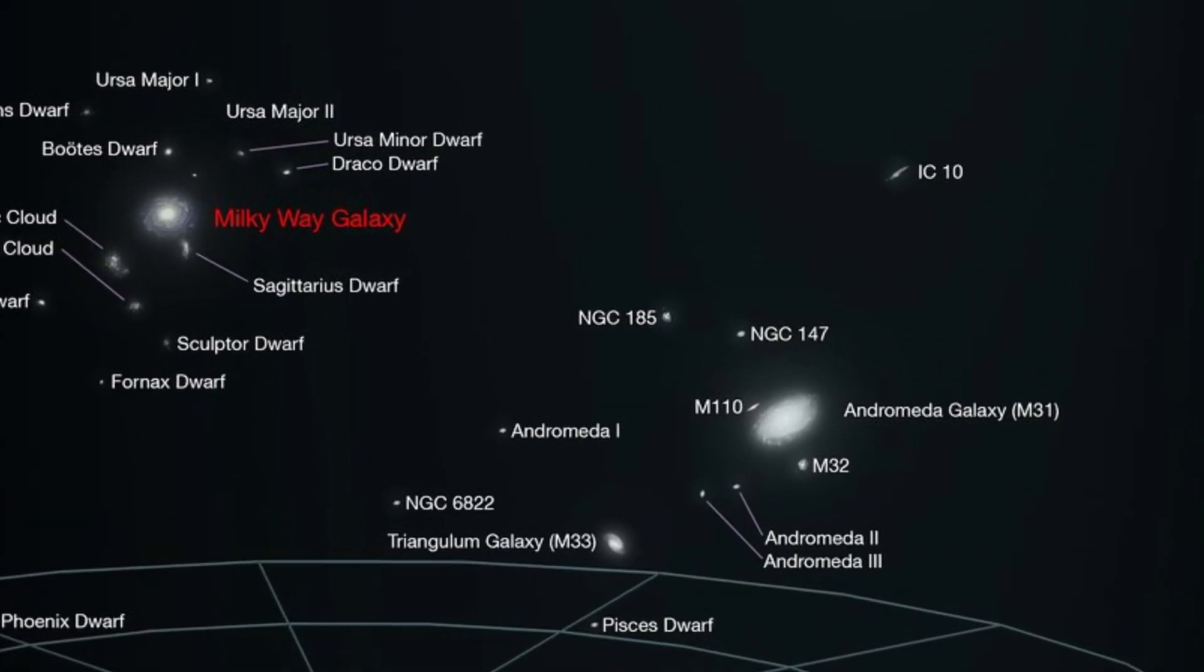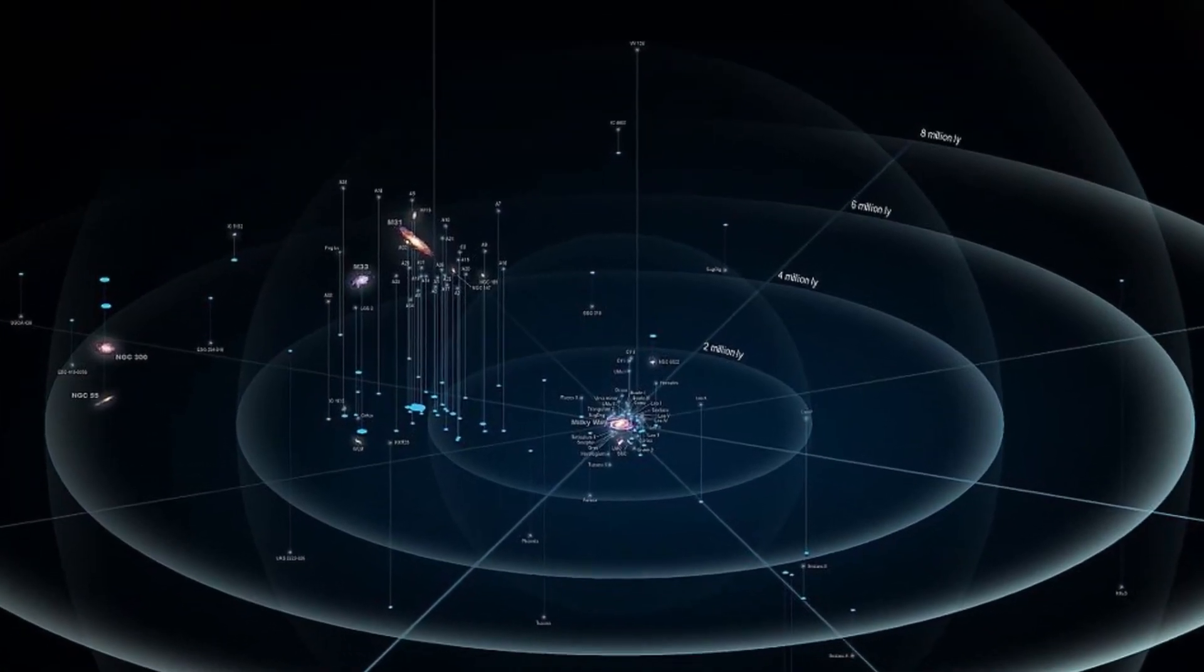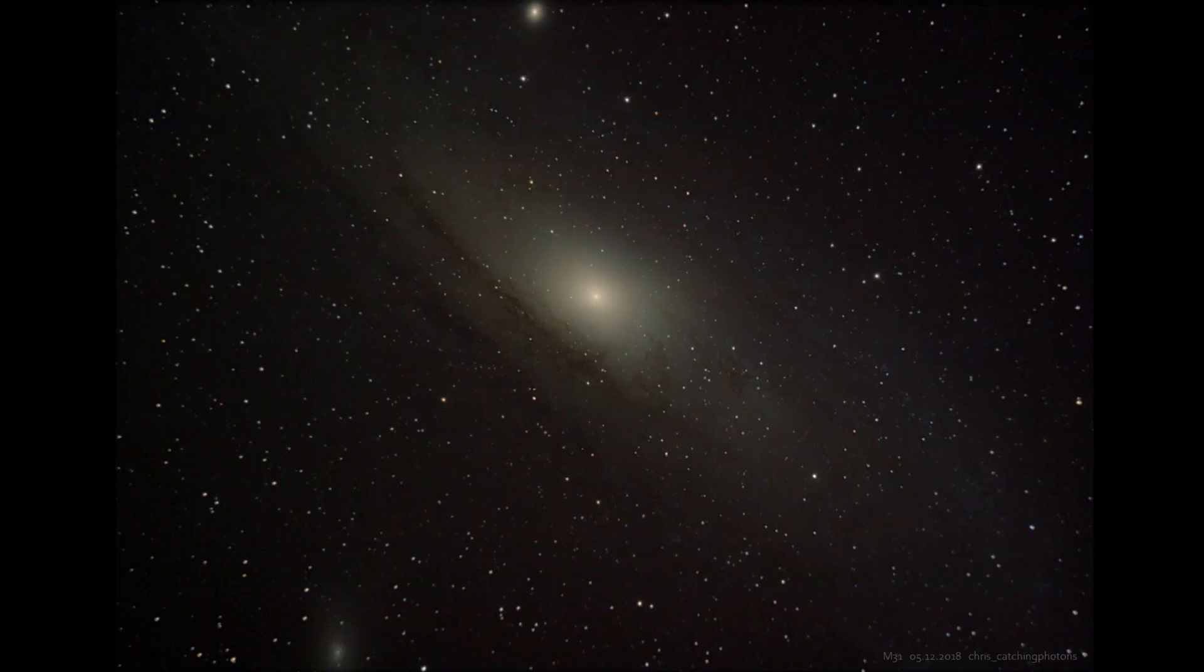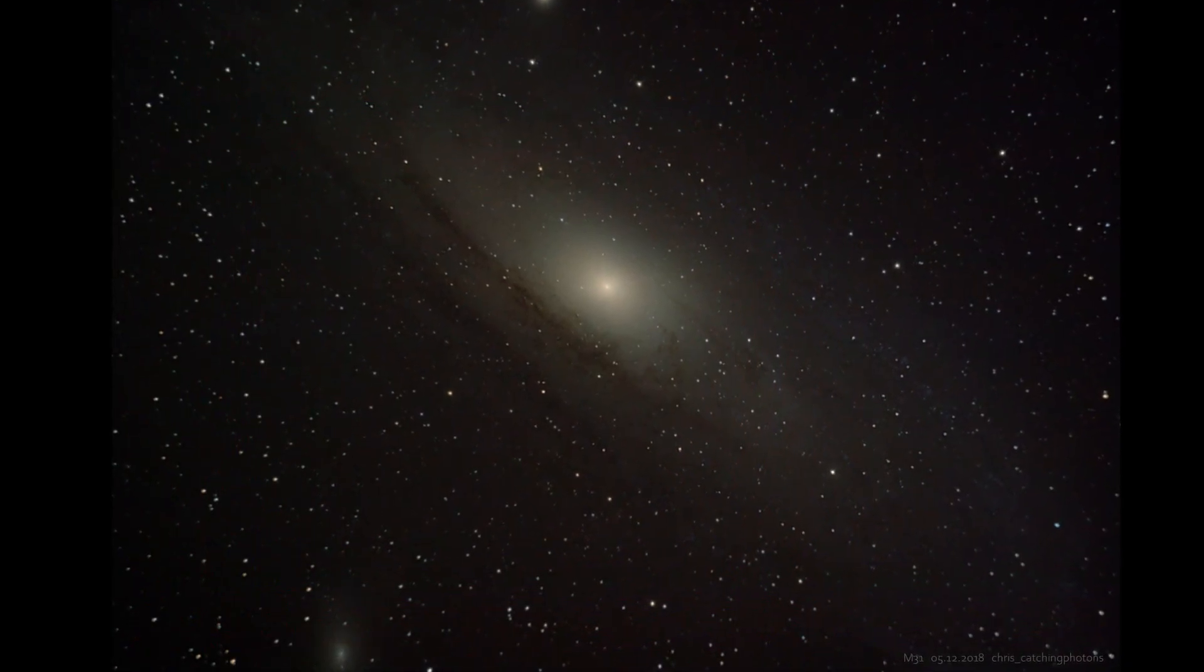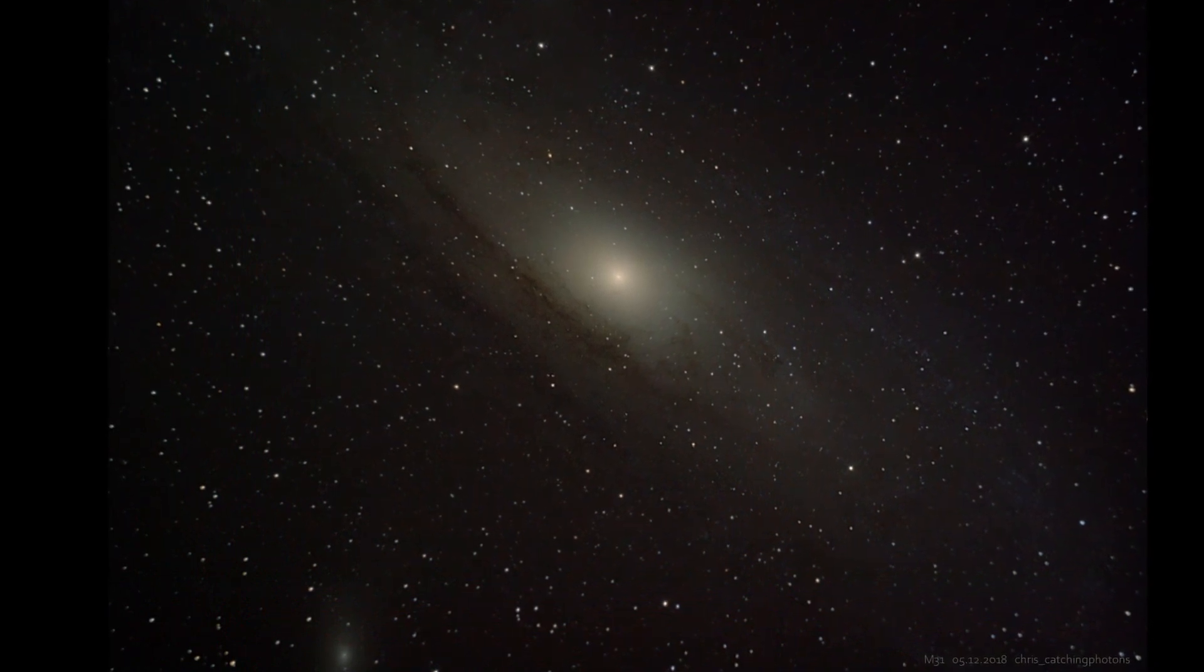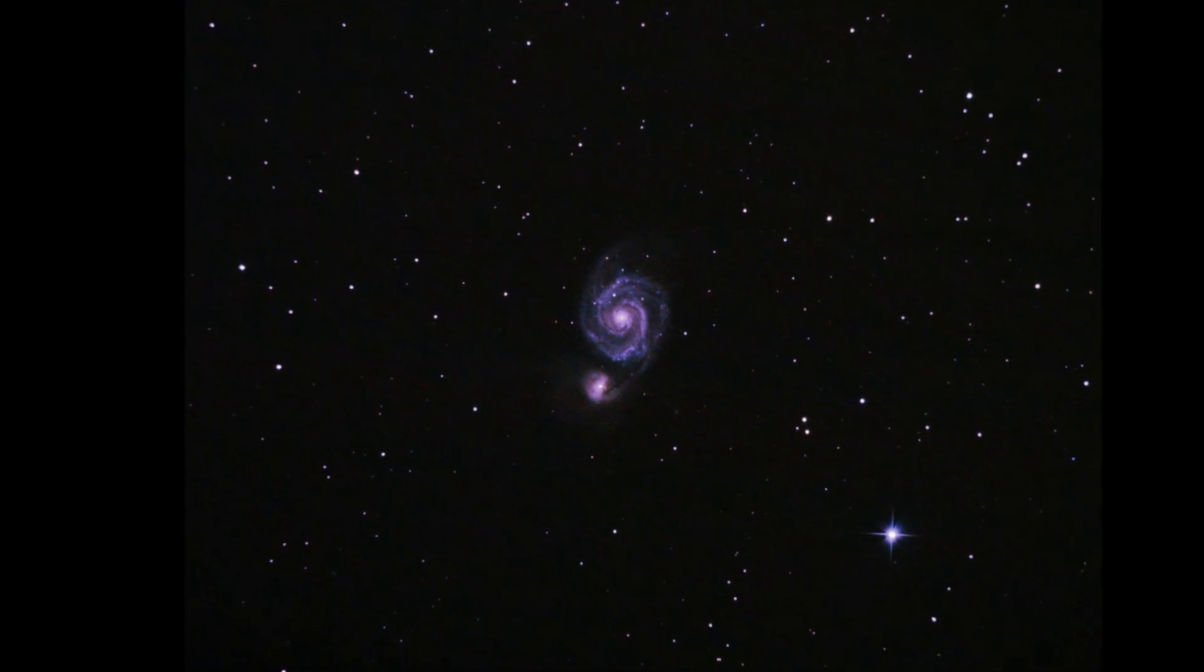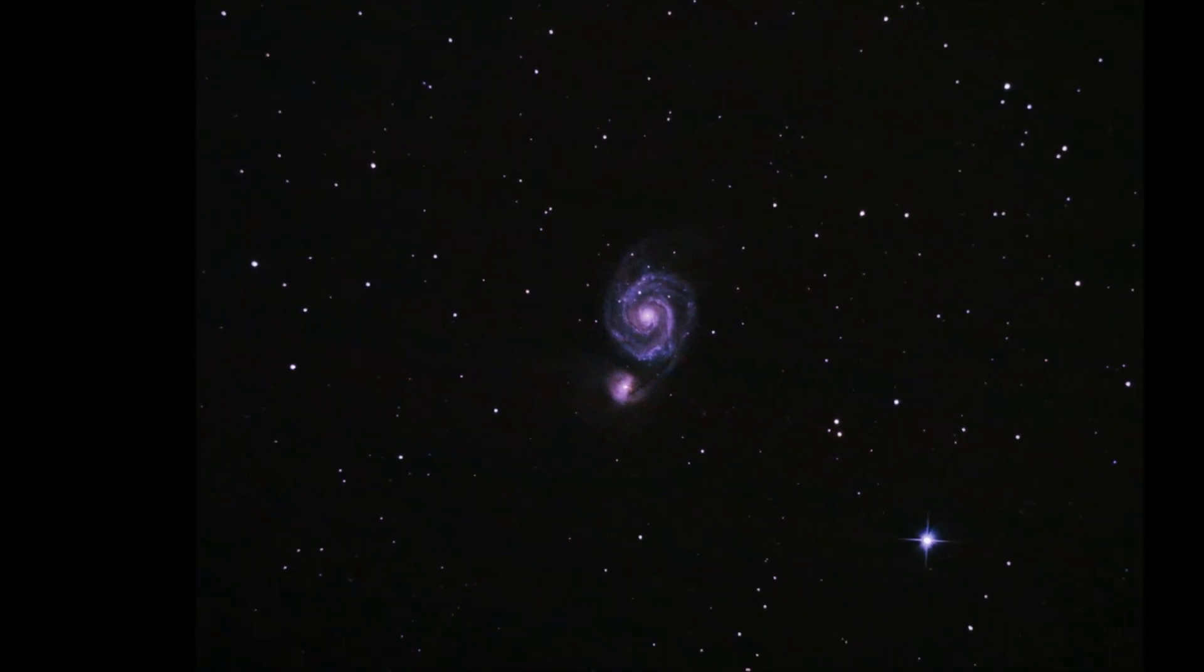This galaxy is 2.5 million light years away and that's a close neighbor in astroterms. Before Hubble's observations on certain types of supernovae to measure vast distances, nobody knew whether the fuzzy clouds observed in the sky are inside our galaxy or objects of their own.